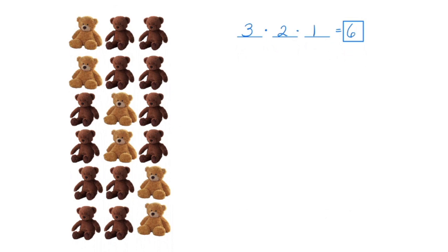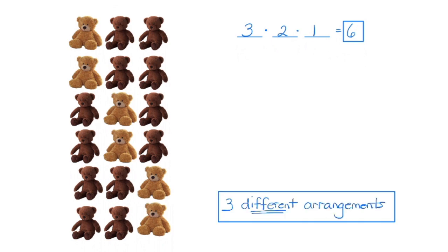However, if I flip these two identical bears around — this bear goes here and that bear goes there — my arrangement doesn't look any different. Even though I took the first bear and switched him with the other bear, you can't tell by looking at the arrangement. So I have six arrangements, but pairs of them look the same, and we actually end up with only three different arrangements.